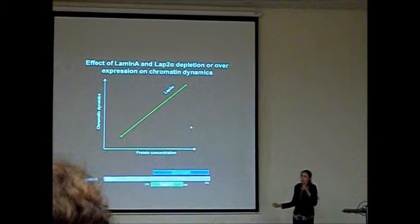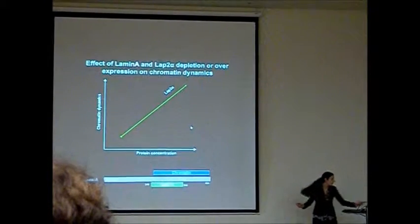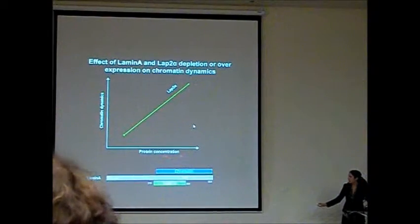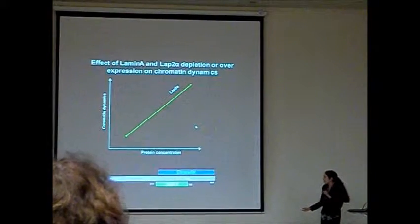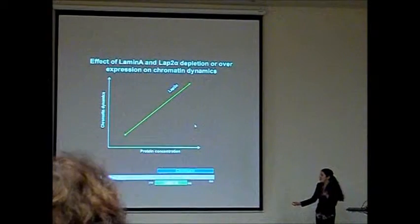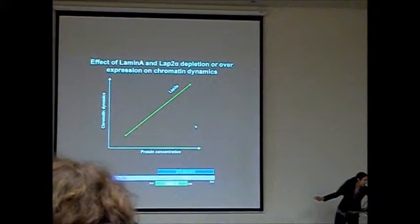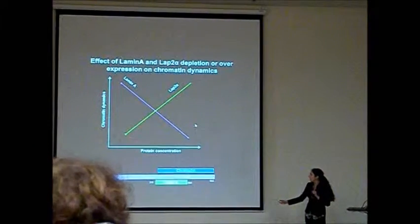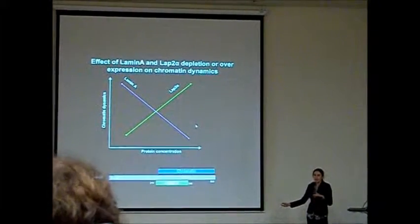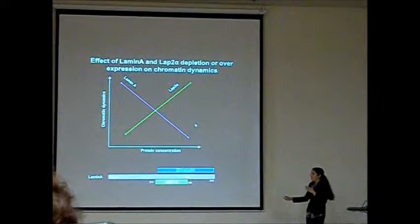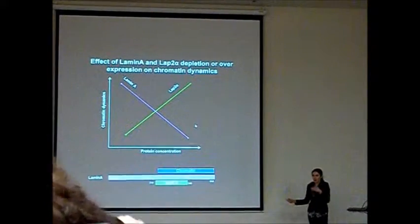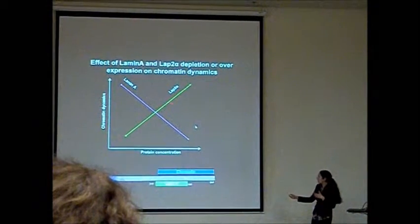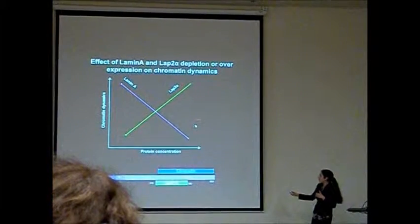Here I will just summarize a lot of experiments in this graph. This is chromatin dynamics, and this is protein concentration. And we found that depletion of LAP2-alpha leads to the opposite effect than lamin A depletion. In the cells that we don't have LAP2-alpha protein, the chromatin dynamics was less. And in the opposite way, if I overexpressed, in simple words I added more LAP2-alpha to the cells, the dynamic of chromatin increased.